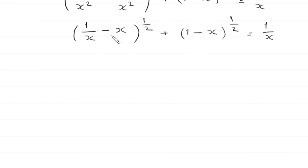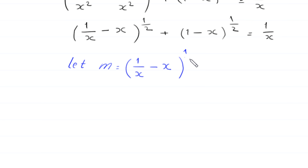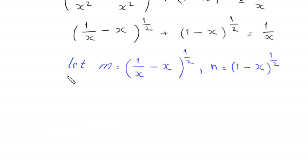Now we suppose that m equals (1 over x minus x) to the power 1/2 and n equals (1 minus x) to the power 1/2. Substituting m and n into the equation gives m plus n equals 1 over x. We name this equation 1.